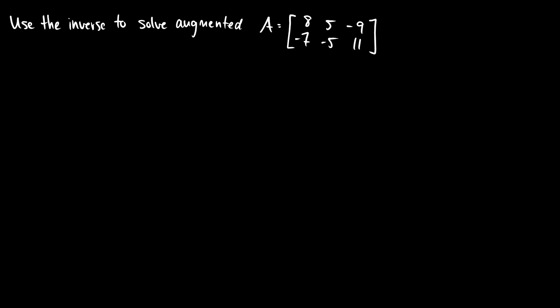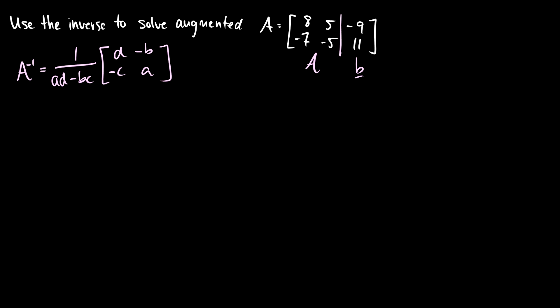Let's do a computational example. We have an augmented matrix — the matrix A with column vector b. First we need to find A inverse. Recall the formula: A inverse equals 1 over (ad minus bc) times the matrix with entries d, negative b, negative c, a. Check out the last video for a refresher on this formula.